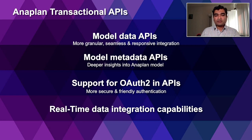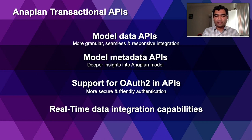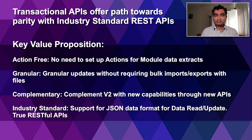Second, these APIs are designed to be granular — they allow users and customers to work with small amounts of data for read or write. For example, if I'm reading data from a view, I'll be able to parameterize it at runtime. If I have a module with products in the page dimension, at runtime in my integration solution I'll be able to specify which product SKU I want data for. More responsive and more granular integrations. The existing bulk APIs will continue to be supported for the foreseeable future. The new transactional APIs are something in addition, designed to give more capabilities.